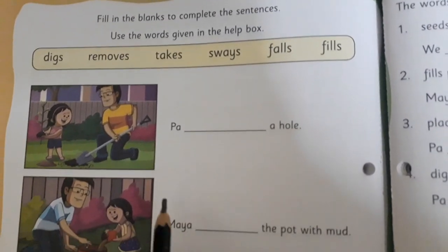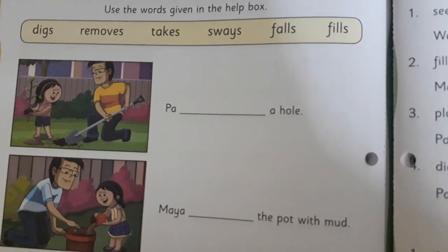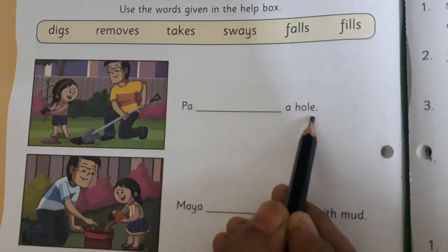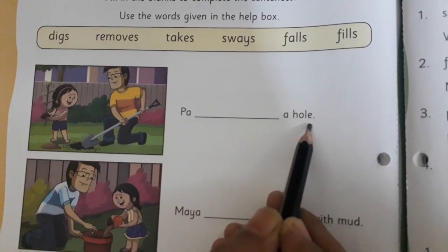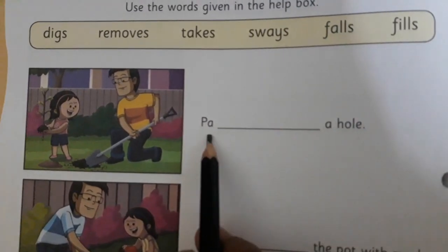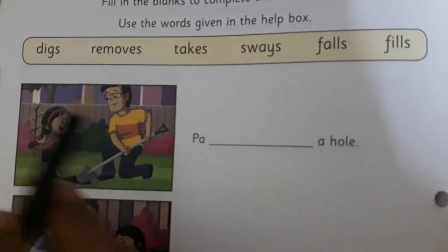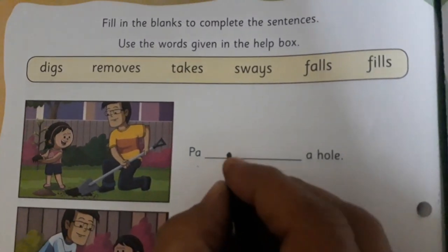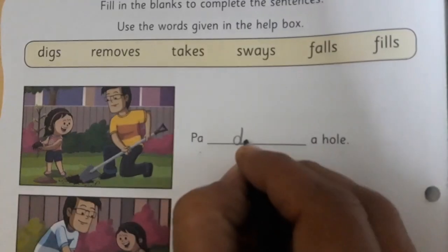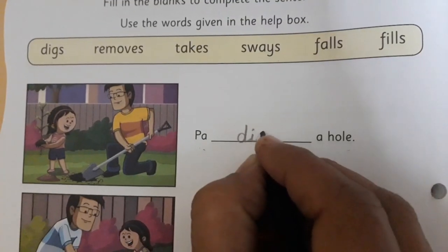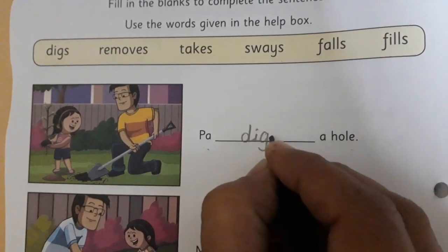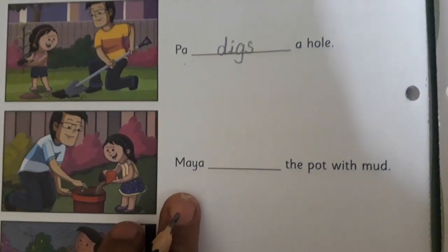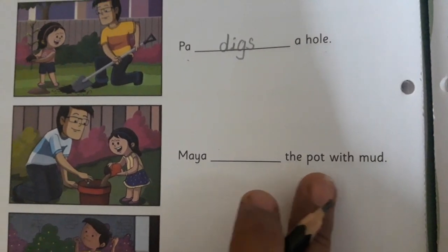Let's read the sentences. 'Pa ___ a hole.' Now which word will come? Pa removes a hole? No — Pa digs a hole. So everyone please write 'digs' — D, I, G, S — digs.